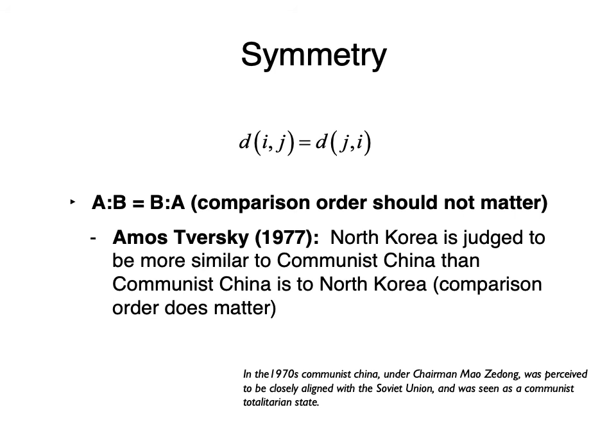The symmetry assumption is a little more complicated and seems more problematic for the geometric model. If things are represented in a psychological space analogous to physical space, there should be no difference between comparison order. The distance between object I and J should be exactly the same as the distance between J and I. But that doesn't seem to be the case — comparison order matters for complex things.